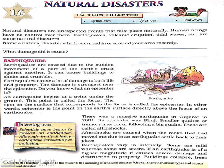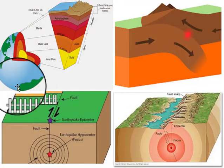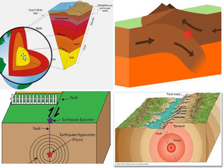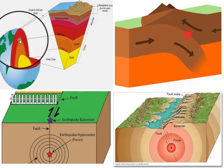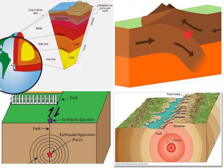But an earthquake of higher intensity can damage so many things. We will learn about those things later. Now, earthquakes are caused due to the sudden movement of a part of the earth's crust against another. In this picture, this is our inner core, this is the outer core, this is the mantle, and the upper surface is our crust.